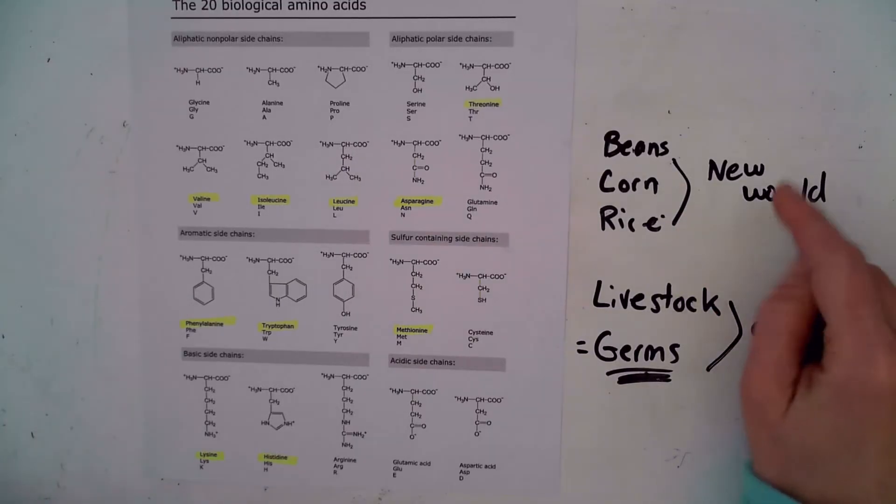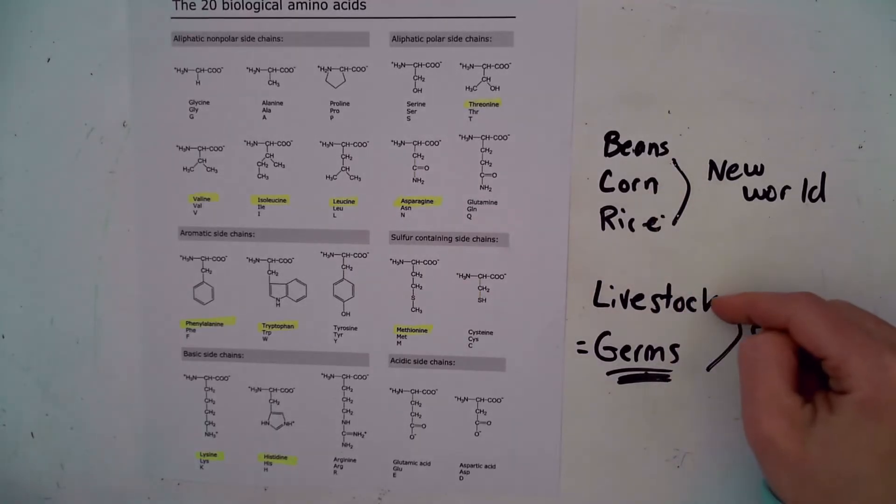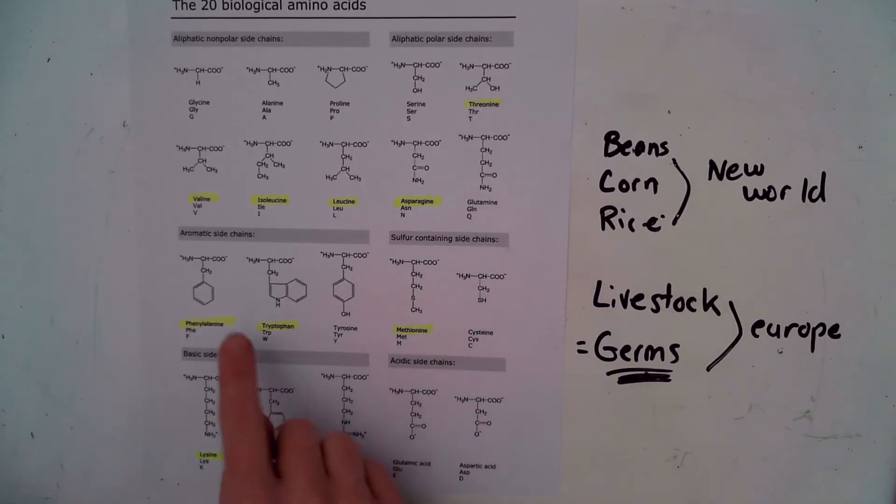In the new world the essential amino acids were found in these foods and people did not need to have livestock and so they never bred really dangerous germs that they could then pass to the European settlers. So world history is very much tied in to the idea of which amino acids are necessary in our diets.